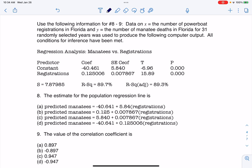Hey everyone, I'm going to do numbers eight and nine together because they've got the same set of information. Let's look at these two multiple choice questions. Data on the number of powerboat registrations in Florida and the number of manatee deaths in Florida for 31 randomly selected years was used to produce the following computer output. All conditions for inference are met.